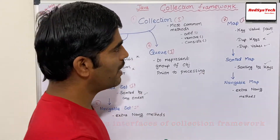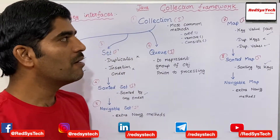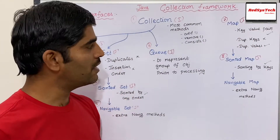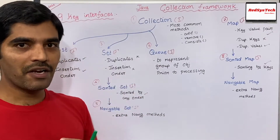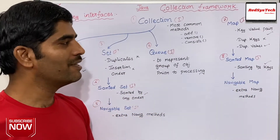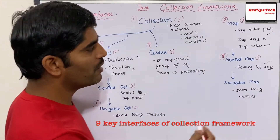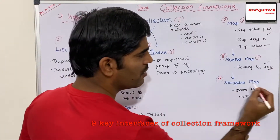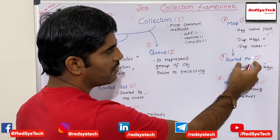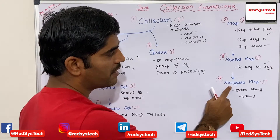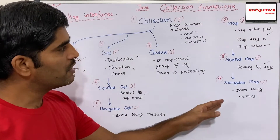The eighth interface is SortedMap, which is a child interface of Map. By default, Map doesn't have any sorting, but SortedMap allows you to sort by keys — for example, in ascending or descending order. The ninth interface is NavigableMap, which is a child interface of SortedMap. It inherits all the properties of Map and SortedMap and additionally contains extra navigable methods so you can navigate between objects inside the map.